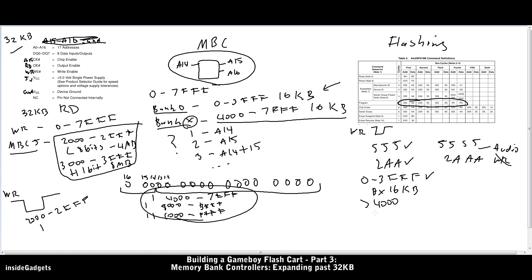So that's the basics of an MBC. All it's doing is just switching address lines high or low for us. In the next part, we'll look at adding RAM to our flash cart. Thanks for watching.